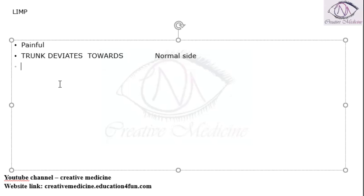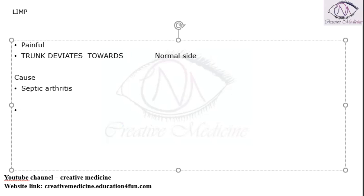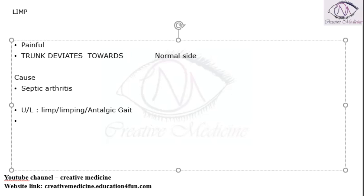The main cause of limp can be septic arthritis. Limp can be either unilateral or bilateral. If it is unilateral it is called as limp, limping, or antalgic gait. If it is bilateral, limp is not applicable — it is mainly present unilaterally.